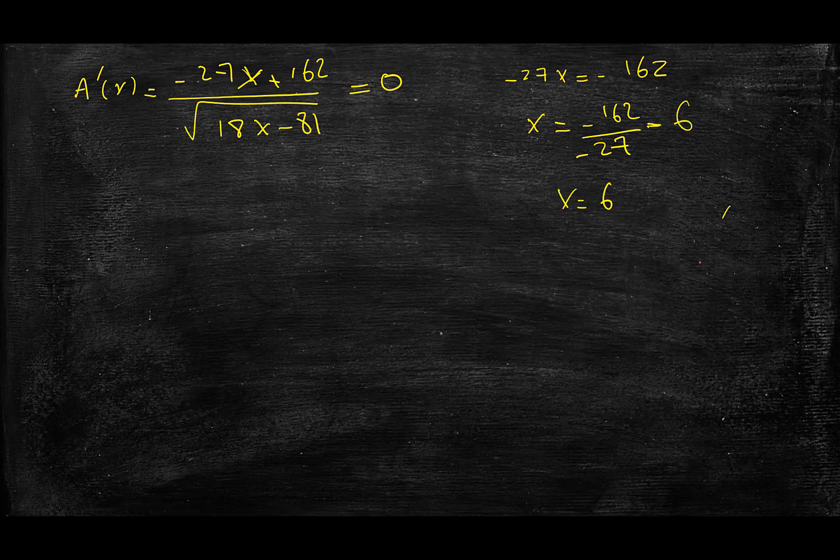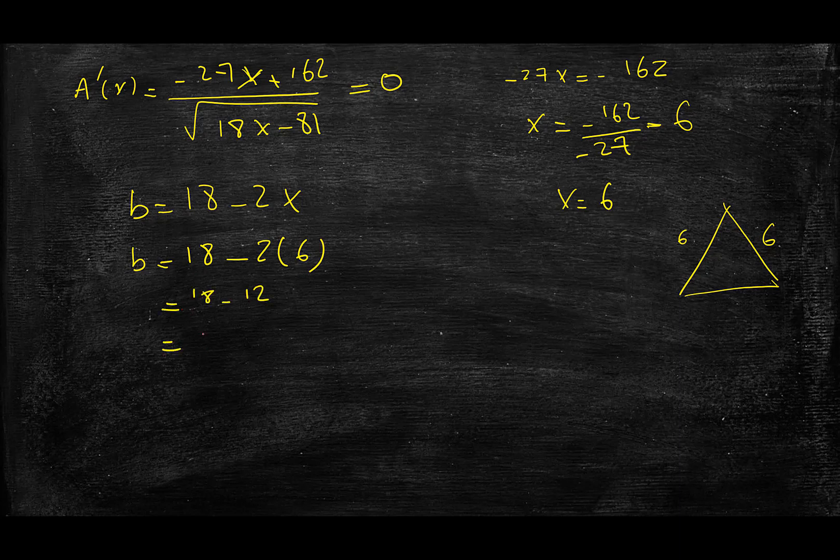So x is equal to 6. So when I had the triangle here, and x was the sides, this is 6 and this is 6. So what would be the base? If I went back to the relationship, b equals 18 minus 2x. So plugging in 6, I will have 18 minus 2 times 6, which is 12. And 18 minus 12 would be equal to 6 as well. So to maximize the area, I should have an equilateral triangle with side 6.